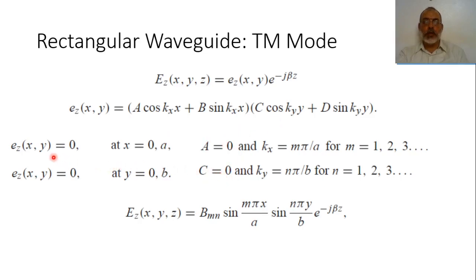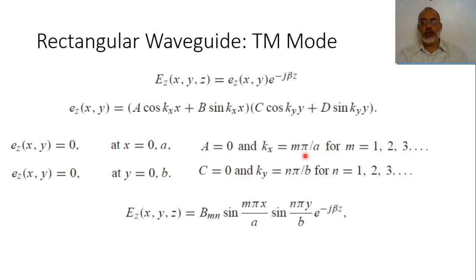Now, applying the boundary condition at x equals a, the electric field is 0, so sin(kx·a) equals 0. This means kx equals mπ/a, where m equals 1, 2, 3... and cannot be 0. Mathematically m=0 is possible, but physically it would not be. Similarly, at y equals b, sin(ky·b) equals 0, giving ky equals nπ/b, where n equals 1, 2, 3... and also cannot be 0.